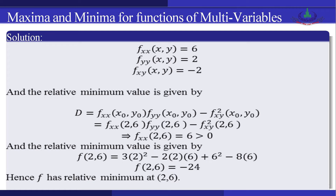Since D > 0 and f_xx = 6 > 0, there is a relative minimum. The relative minimum value is f(2, 6) = 3(2²) − 2(2)(6) + 6² − 8(6) = 12 − 24 + 36 − 48 = −24. Therefore f(x, y) has a relative minimum value of −24 at the point (2, 6).